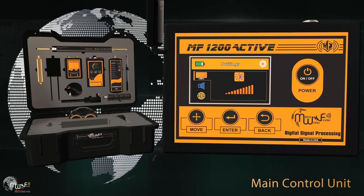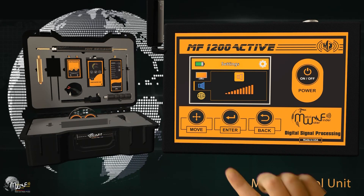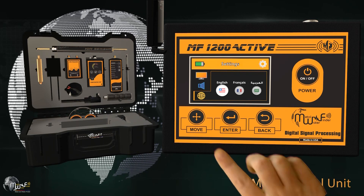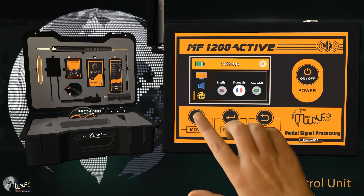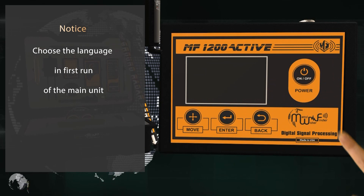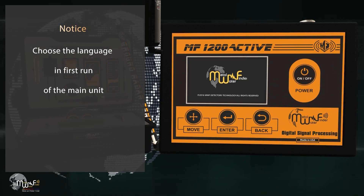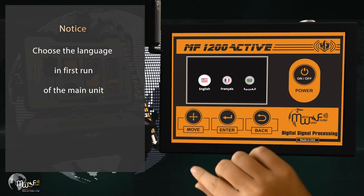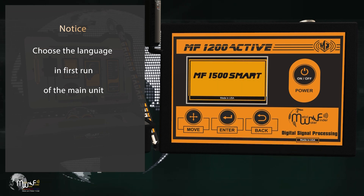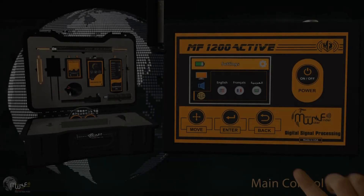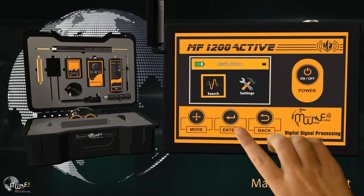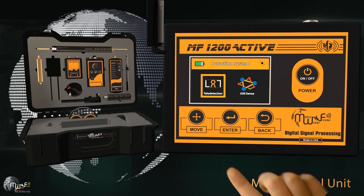Access the settings menu to control screen brightness level, sound intensity level, and language selection — available in English, French, and Arabic. Choose the desired language and return to the main menu. Then navigate to the search menu to select the desired detection system: remote detection system or ionic detection system.